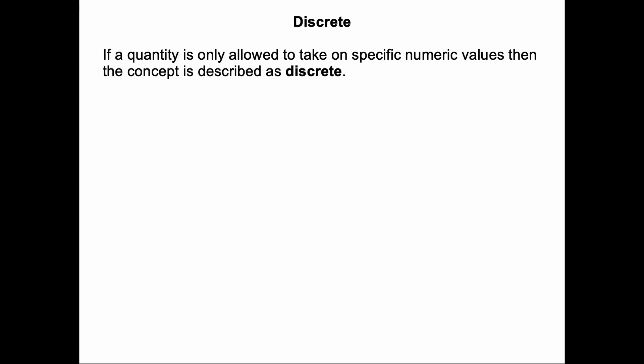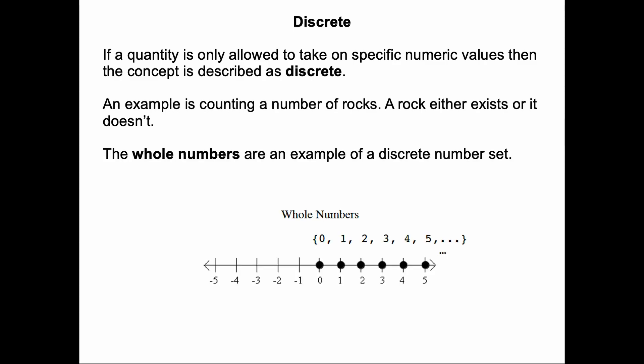A quantity that's only allowed to take on specific numeric values would be considered discrete. An example is counting a number of rocks. A rock either exists or it doesn't, so only whole numbers are allowed. The whole numbers are an example of a discrete number set. They only exist on the hash marks, and we don't see any decimals or fractions here.